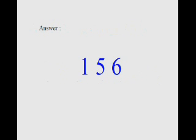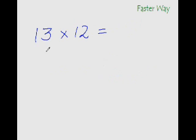So, let us take out the faster way of doing it. In order to multiply 13 with 12 quickly, all you need to do is add this digit to this entire number. So, 2 plus 13 is 15 and you have the first two digits of your answer.